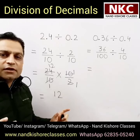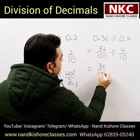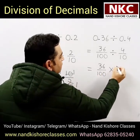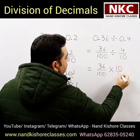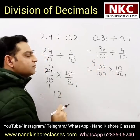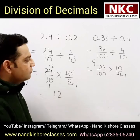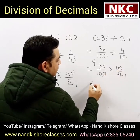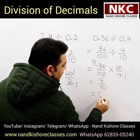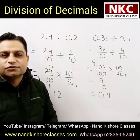Following the same procedure, we have 36 over 100. Change the division sign to multiplication and 4 over 10 becomes 10 over 4. In the table of 4, 36 can be cancelled — it comes at 9. When the zeros are also cancelled, we are left with 9 over 10. And 9 over 10 means 0.9 is going to be the answer for this question.